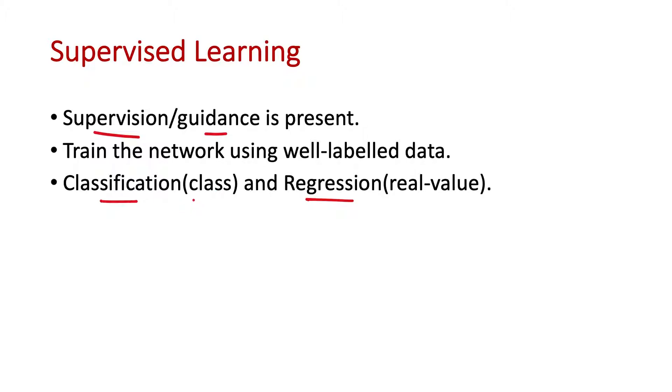Classification, as the name suggests, deals with categorizing the data into classes, whereas in regression we get some real-valued output.